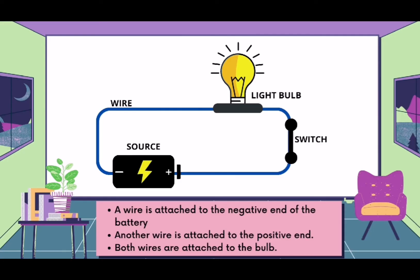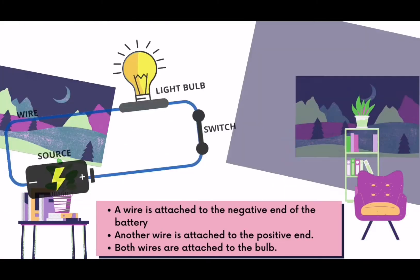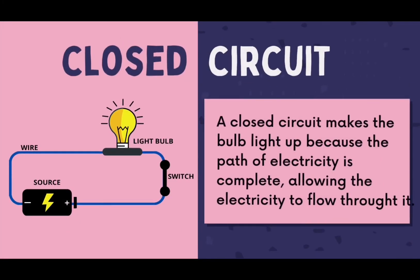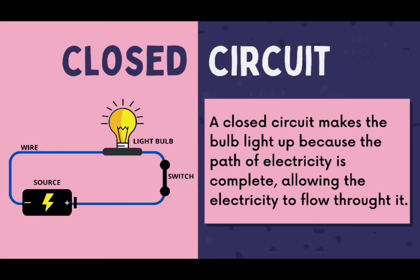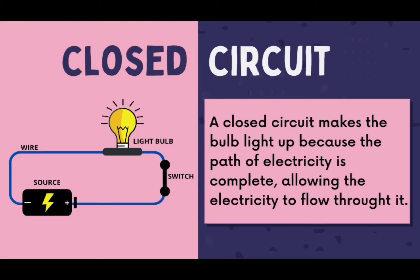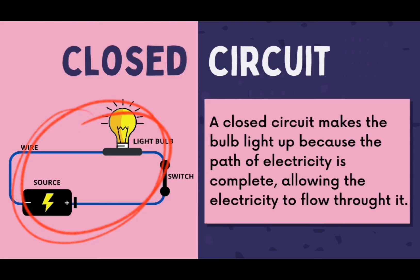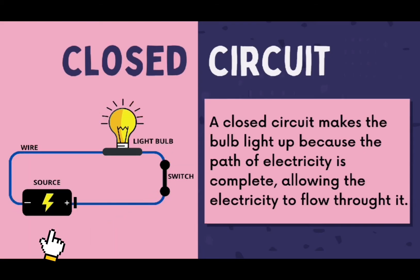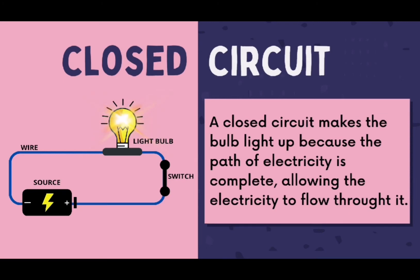In this lesson, we will be identifying two types of circuit. The first one is the closed circuit. A closed circuit makes the bulb light up because the path of electricity is complete. Makikita natin sa diagram na kompleto o buo ang daraanan ng electricity mula sa source patungo sa light bulb. That's why it allows the electricity to flow through it, kaya't umiilaw ang bumbilya in a closed circuit.